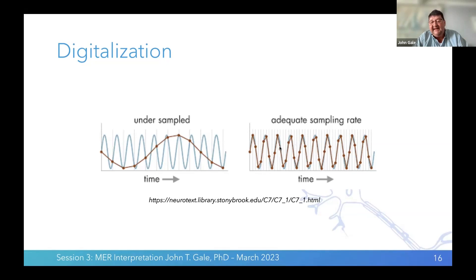If we sample fast enough, when we connect the dots, we actually see the underlying frequency. This is undersampled; this is sampled appropriately. You can also oversample — getting many more dots — which isn't really a problem other than it takes a lot of memory and storage. If you sample adequately, you'll see the underlying frequency of the signal you're interested in.